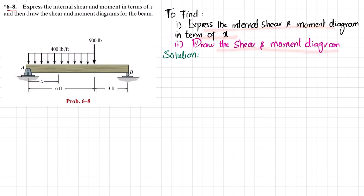Let's start with the solution. The first step is to remove the support at point A, giving a reaction force Ra, and remove the roller support, giving reaction force Rb. The uniformly distributed load converted into a point load equals 400 multiplied by 6 feet, acting at a distance of 3 feet from that end.